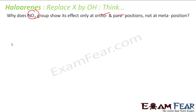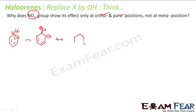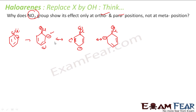Let us first draw a normal halo arene and see what is there. We have a chlorine with lone pairs. The lone pair gives electrons into the ring, forming a double bond — a negative charge develops. If you draw more resonance structures by breaking bonds, the negative charge is at the ortho position, para position, and ortho position.